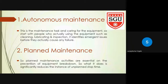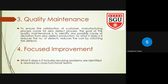The third pillar is Quality Maintenance. To ensure customer satisfaction, manufacturing processes must come from a zero-defect process. The goal of quality maintenance is to identify any possible cause of deviation from zero-defect production, reducing the number of defects and reducing cost by catching defects early.